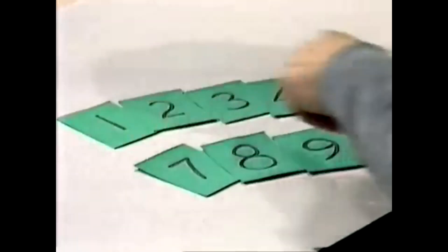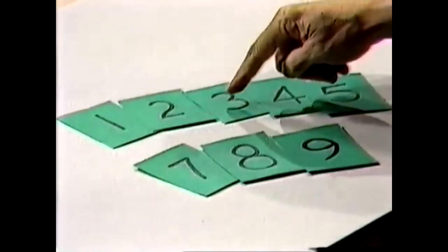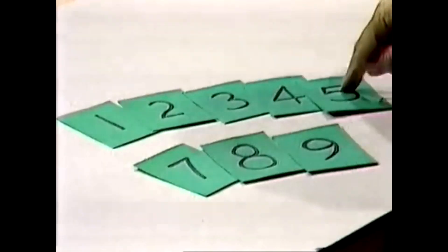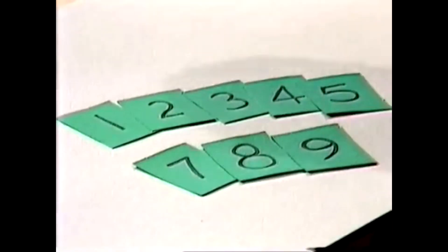We'll add the total of all eight cards and see what we get. One plus two is three, plus three is six, and four ten, and five makes fifteen, and seven makes twenty-two, plus eight is thirty, plus nine, thirty-nine.